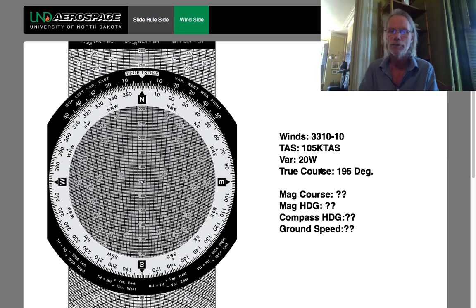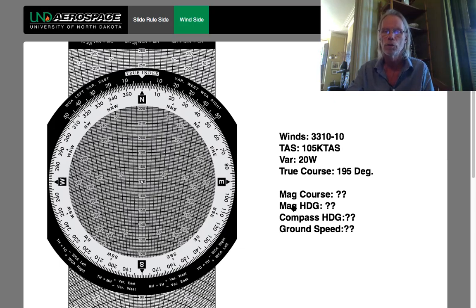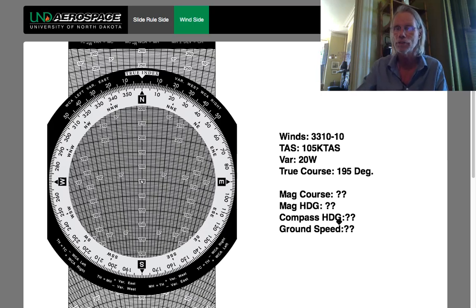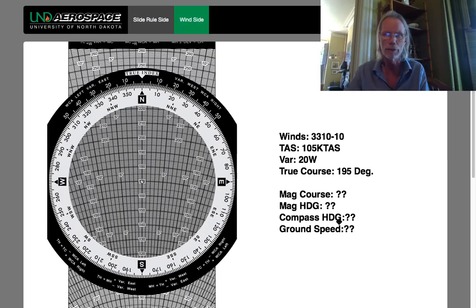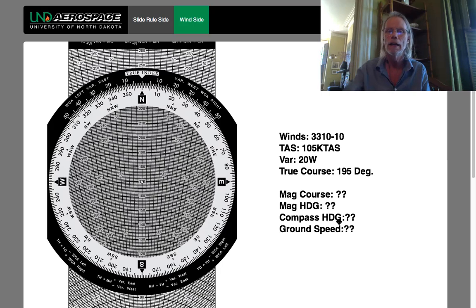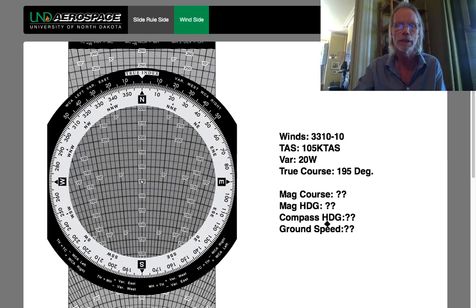So what information do we need for our cross-country planning? We know our true course. What's the magnetic course going to be? That's based on the winds. What's the magnetic heading going to be? That's based on the variation. What's the compass heading going to be — the one you actually orient your aircraft on with the compass? That's based on the deviation card in your aircraft. And the ground speed — how fast we'll be flying over the ground. We can do all of that with the E6B and the triangle of velocities.